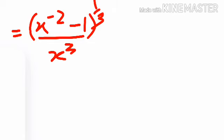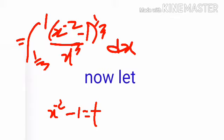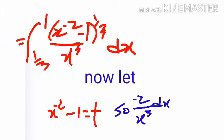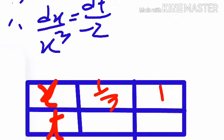Our integration is now simplified. We let t equal x^(-2) minus 1. Taking the derivative of x^(-2): the exponent -2 comes down first, then the power reduces by 1, giving minus 2 times x^(-3), which equals minus 2 divided by x-cube. So dx divided by x-cube equals dt divided by minus 2.